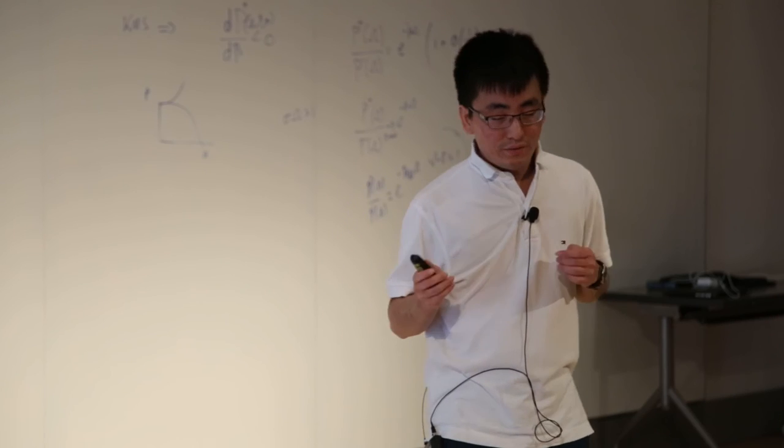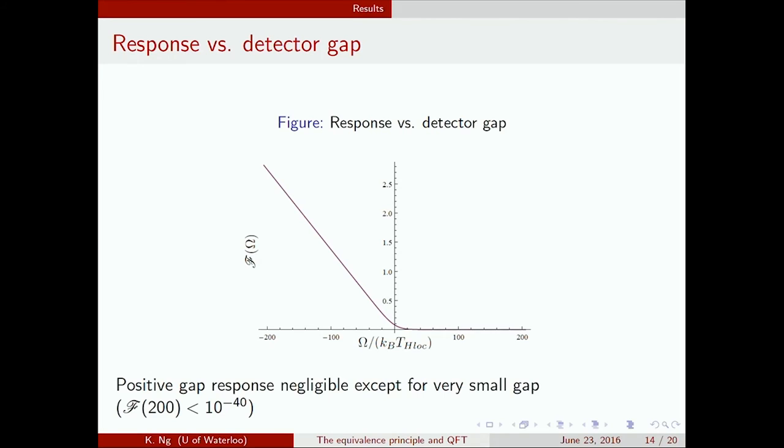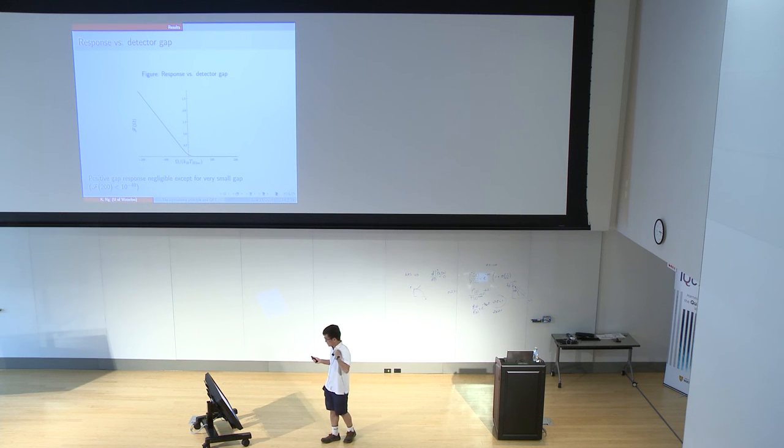The response is much as you'd expect. For both cases, where we have negative gap—that is, we're trying to figure out if the detector emits a particle—you get this rather strong response. Whereas you get a very weak and decaying response if the detector is initially in the ground state. It's not uniformly zero of course, because since we're doing a finite time switching, there's a chance that the switching will excite the detector on its own. That's why it's not zero here.